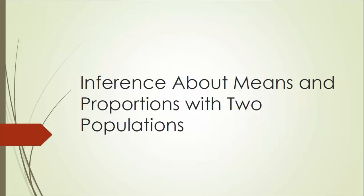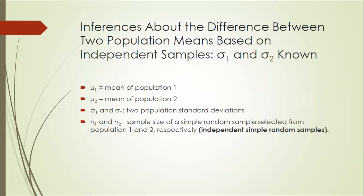In this chapter, we are going to talk about inference about means and proportions with two populations. We are going to start with the case about inference about the difference between two population means. Not surprisingly, we are going to start with the easiest case. This is about inference about the difference between two population means based on independent samples when both population standard deviations are known.